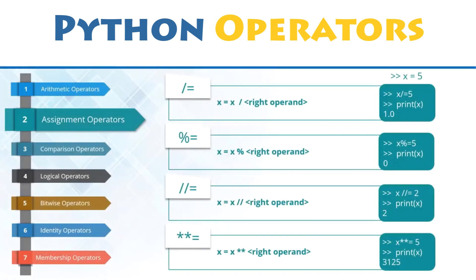Assignment operators are used to assign values to the variables or any other object in Python. For instance, x equals 5 is a simple assignment operator that assigns the value 5 on the right to the variable x on the left. There are also multiple compound operators in Python like x plus equals 5 that adds to the variable and later assigns the same.